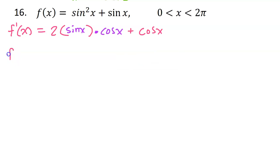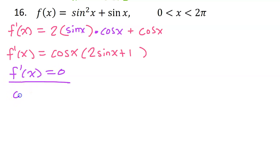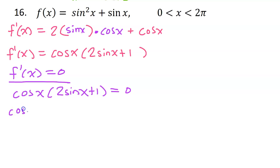Let's go ahead and factor this, which will help us find our critical numbers. I see that cosine x is a common factor, so I'll pull cosine x out in front of the parentheses, leaving 2 sine x plus 1. There are no values of x that will cause this to be undefined, so our only critical numbers will happen when f prime equals 0. Let's set this equal to 0 and solve.